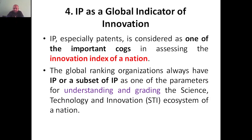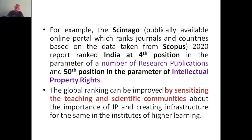IP, especially patents, is considered one of the important causes in assessing the innovation index of a nation. Where there are more IPs and more patents, that itself tells you this particular country has more innovation. Global ranking organizations always have IP or a subset of IPs as one parameter for understanding and grading the science, technology, and innovation ecosystem of a nation. When your country has more patents, your country's grading will be better and it will be recognized as more innovative. For example, you can simply use Scimago — a normal database — which has all the rankings: how many papers have been published by India, Japan, or any other country, and how many patents have been published by India, Japan, or any other country.